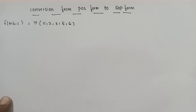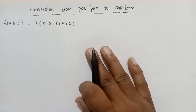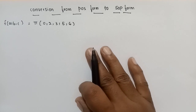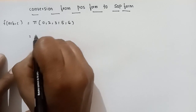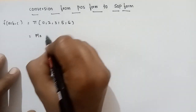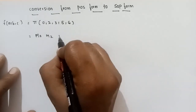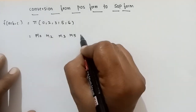I will show you the products of the sum form. This is the products of the sum form. The products of the sum form are max terms. The max terms are: M0, M2, M3, M5, M6.